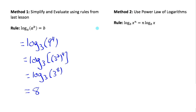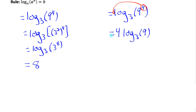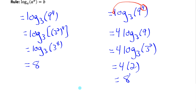Another way to do this: starting from log base 3 of 9 to the 4, I could use the power rule of logarithms to bring the exponent down as the coefficient, giving 4 times log base 3 of 9. Then log base 3 of 9 equals 2, because 3 squared is 9. Rewriting 9 as 3 squared shows log base 3 of 3 squared equals 2. So I have 4 times 2, which is 8 — same answer, just a different method.